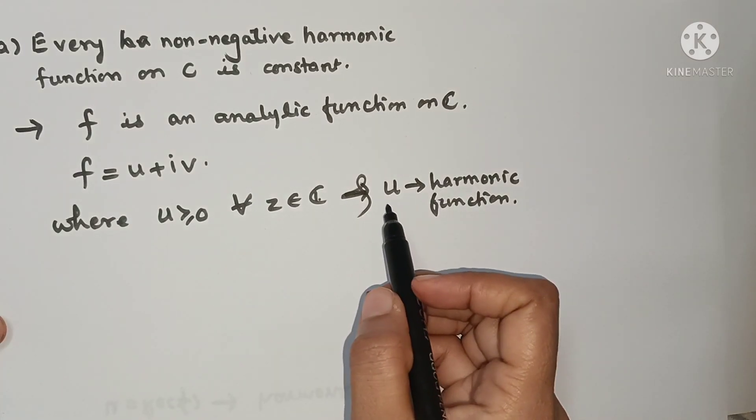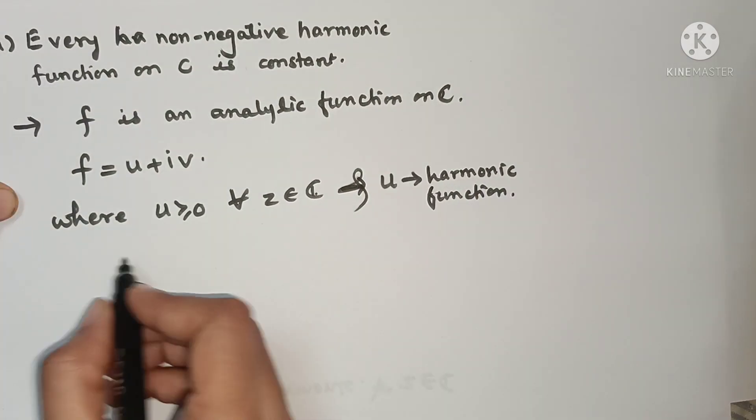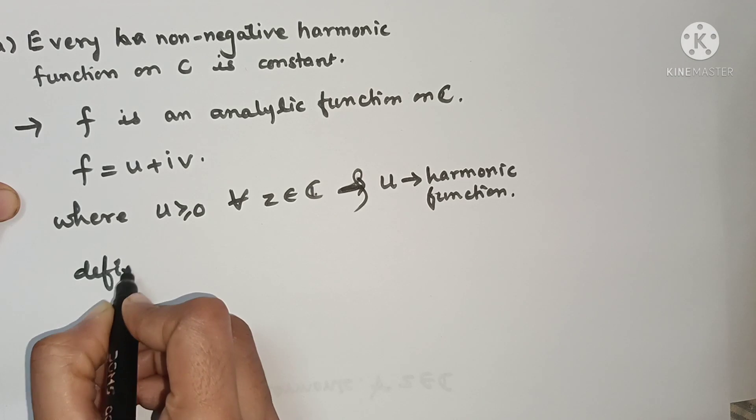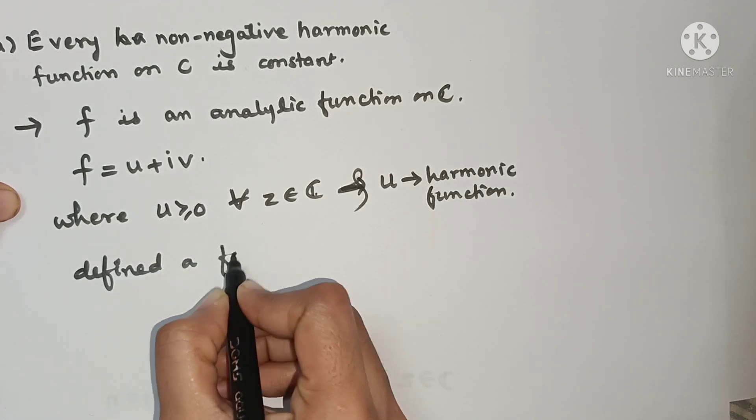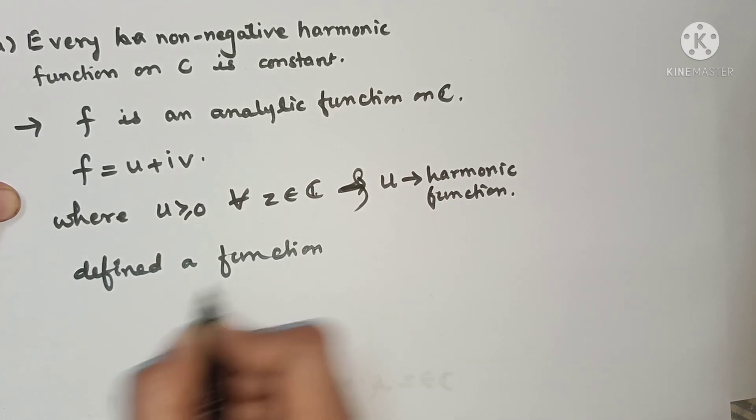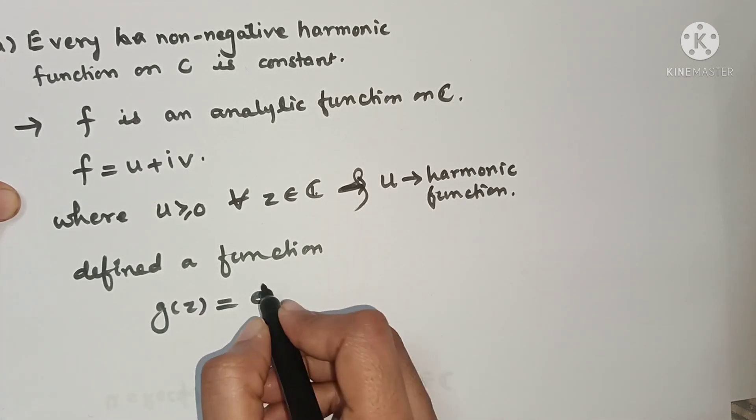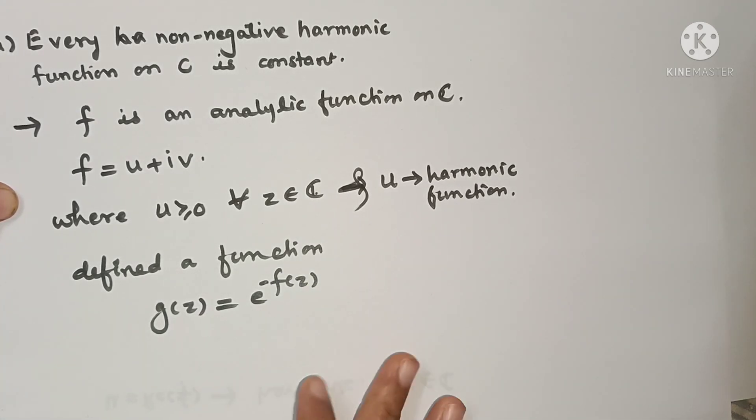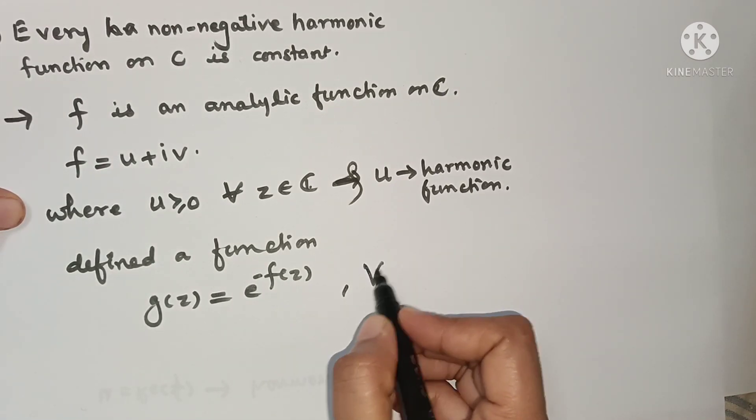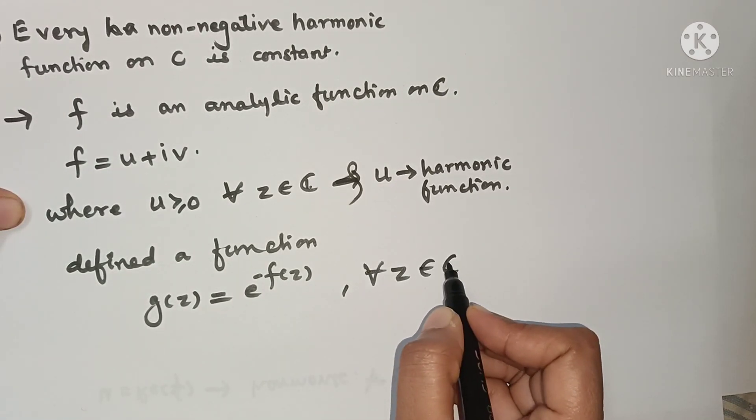What do we do here? U is constant function. Here we define a function G(z) equal to e raised to minus F(z). We define this function for all Z belongs to C.